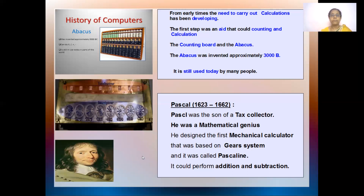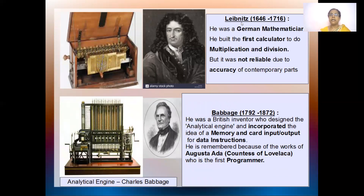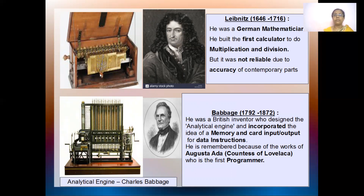The next person is Leibniz, from 1646 to 1716. He is a German mathematician. He built this first calculator and this machine could do even multiplication and division. But it was not so reliable because the accuracy of the parts was not reliable — it was sometimes giving wrong calculations. So it was not so reliable, but it introduced a machine to do multiplication and division.